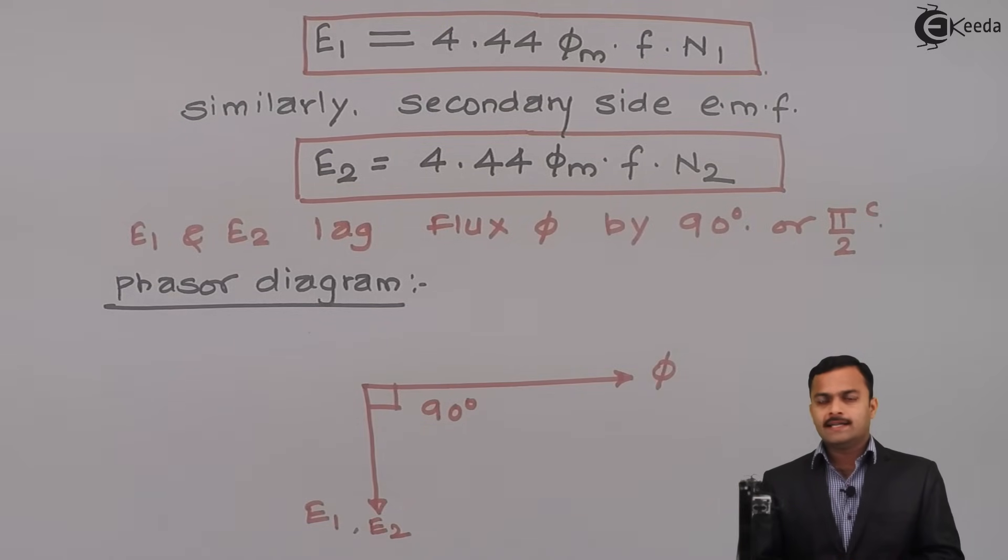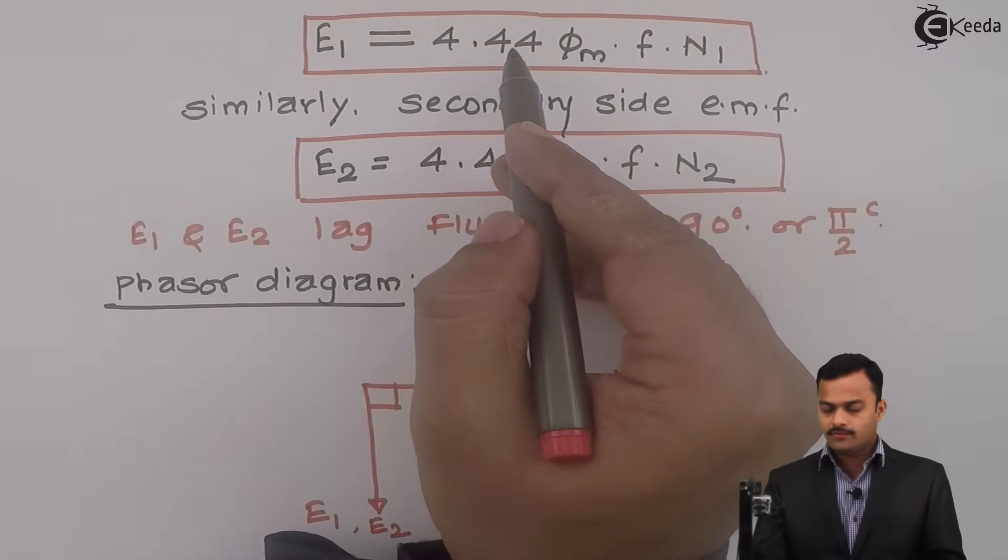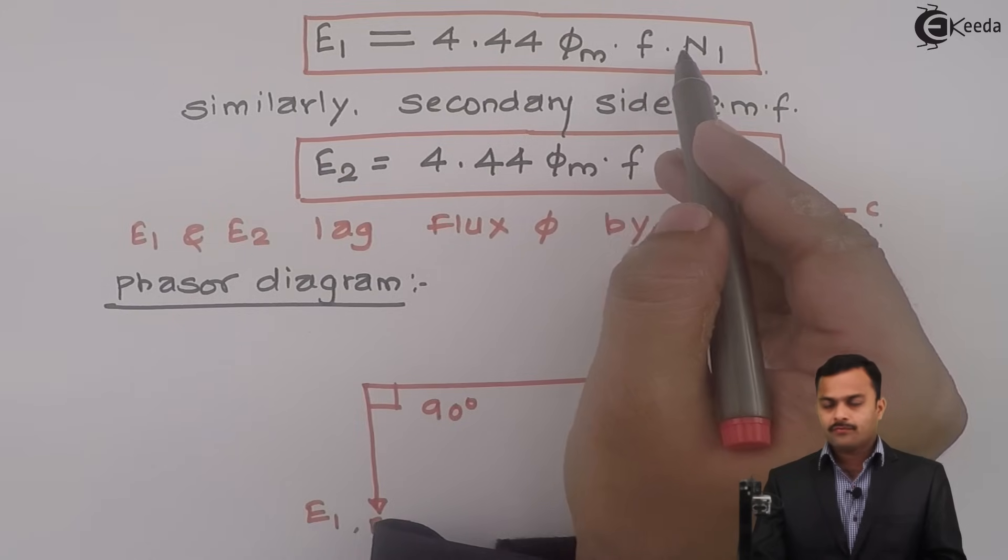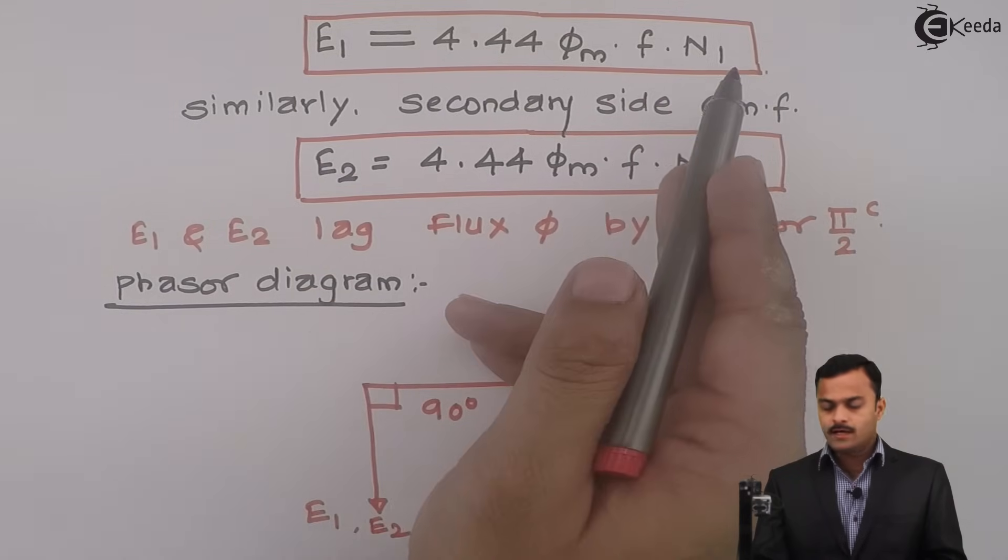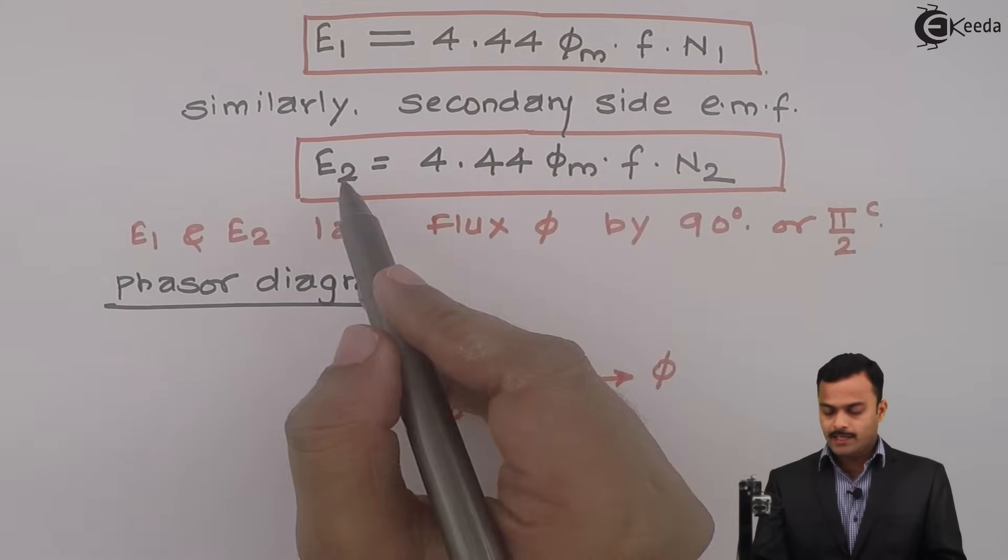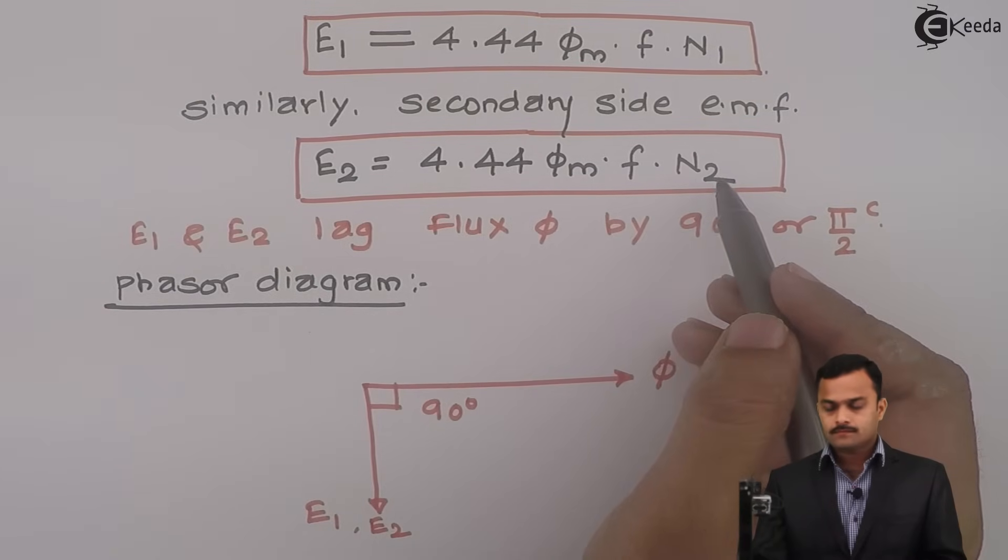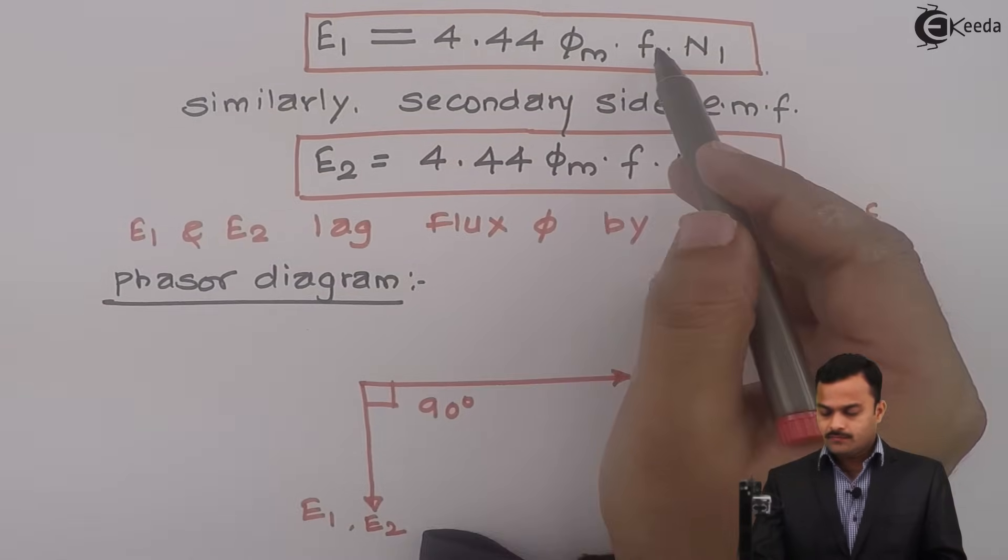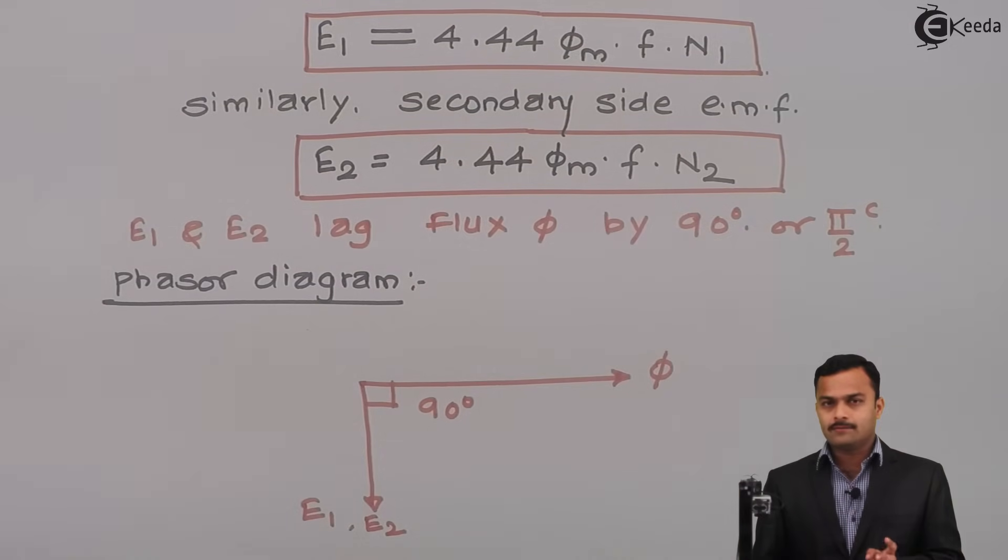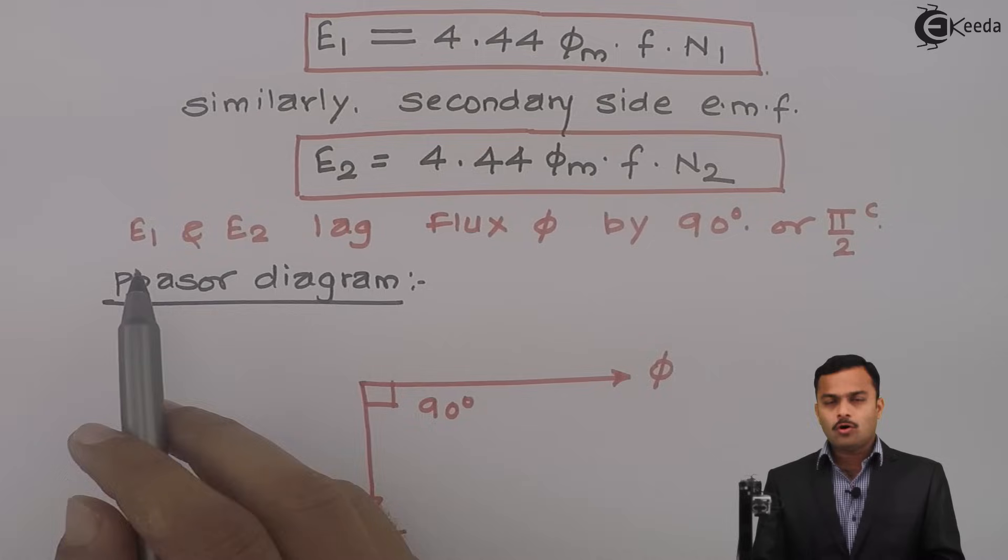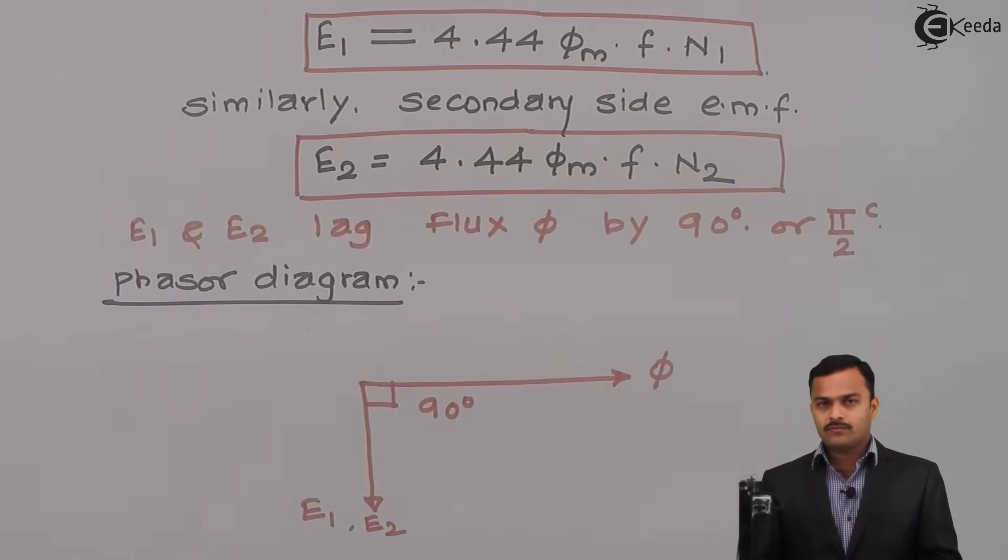Here we have seen EMF equation of a transformer. And that is given by for primary side 4.44 phi m f into n1 where n1 is primary number of turns. E2 is 4.44 phi m into f into n2 secondary number of turns. See over here, frequency f will remain same on both sides. Moreover, this E1 and E2 lag behind flux phi by 90 degree. Thank you.